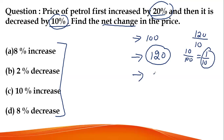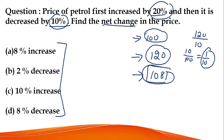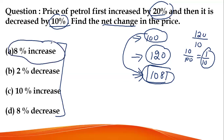So now the value becomes 108. Net change means we compare initial to final — initially it was 100, now it is 108. That means there is an 8% increase overall. So option A is the right answer. That was the first method.